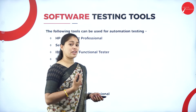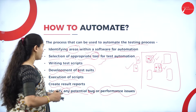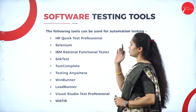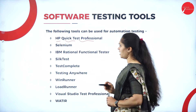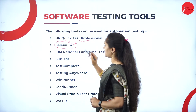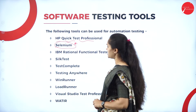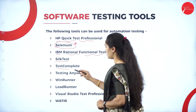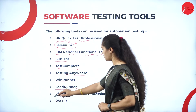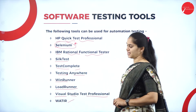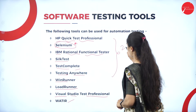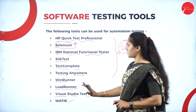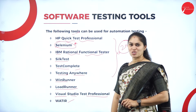The tools available for automation testing include: HP Quick Test Professional, Selenium — which is the most commonly used tool for automation testing — IBM Rational Functional Tester, Silk Test, Test Complete, Testing Anywhere, Win Runner, Load Runner, Visual Studio Test Professional, and WATIR. These are important for exam questions asking to mention or write testing tools.